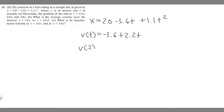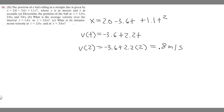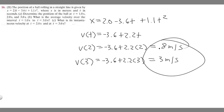Plugging in t equals 2: minus 3.6 plus 2.2 times 2 equals 0.8 meters per second. Plugging in t equals 3: minus 3.6 plus 2.2 times 3 equals 3.0 meters per second. These are the answers to part C, and that's how you solve this problem.